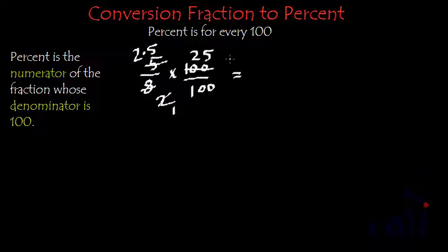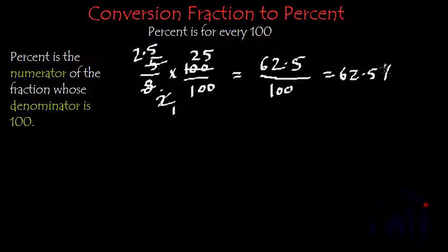So this will be equal to 25 multiplied by 25 is 625, and we will have decimal over here because here we have decimal after one number from right hand side. So here also we will have decimal after one number from right hand side and denominator we will have 100. So percent value of 5 by 8 will actually be equal to 62.5 percent.